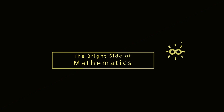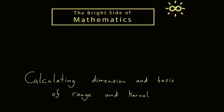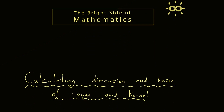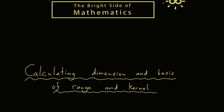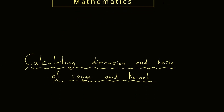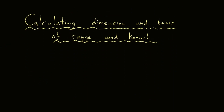Hello and welcome to this quick video in Linear Algebra. Today I want to show you how you can easily calculate the dimension and a basis of the range and the kernel of a given matrix. Please note there are also other names used in this context — instead of range, one says the image of a matrix, and instead of kernel, you also see the null space of a matrix. However, what's important is the definition and knowing how to calculate them. I want to show you this by a practical example.